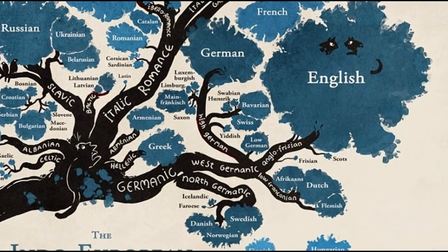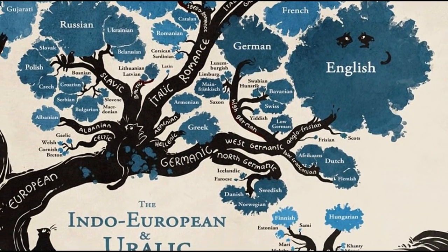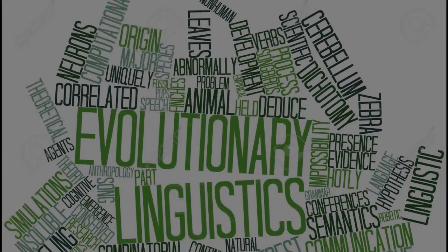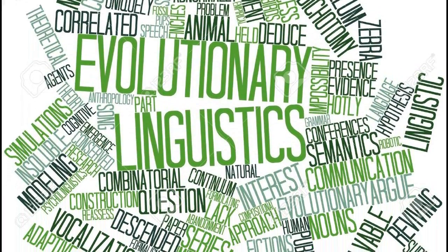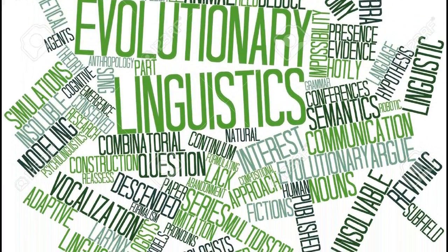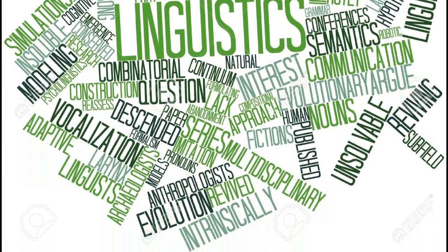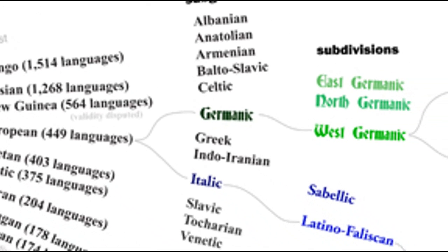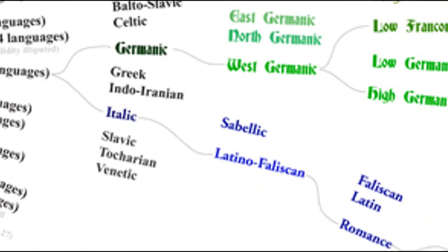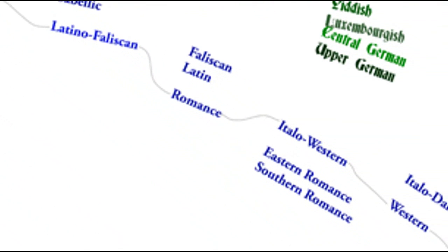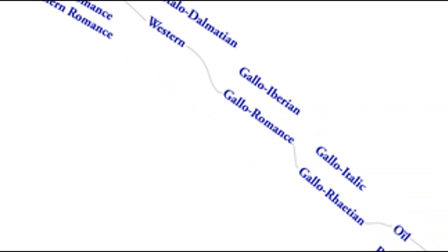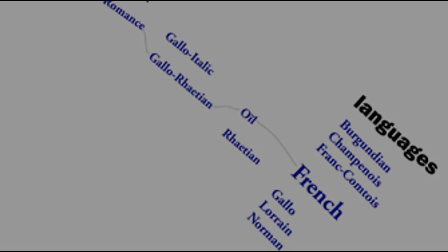One of the best analogies for describing how living things evolve is the development of modern human languages. Many of the ways with which we compare living things in order to hypothesize about evolutionary relationships can directly apply to languages as well. And perhaps if one understands how languages can be classified in a fashion similar to how living organisms are, then an epiphany moment may arise about how taxonomy can be a powerful tool in understanding Earth's biodiversity.